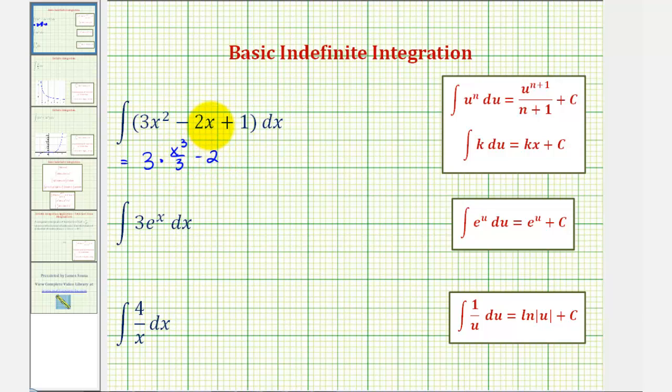Minus two times the integral of x to the first. So if we add one to the exponent, we'd have x to the second and then divide it by two. Plus the integral of one would just be one times x or x, and then plus a constant of integration.